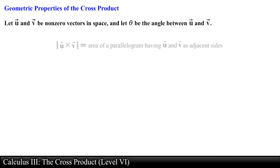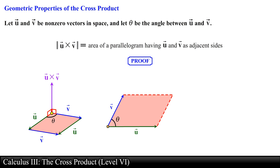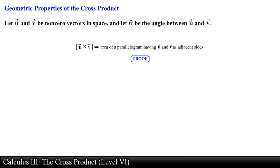The final geometric property, also introduced in the first video of this series: the magnitude of vector u crossed with vector v is equal to the area of a parallelogram having vector u and vector v as adjacent sides. To prove this, we find an expression for the area of the parallelogram given the magnitudes of vector u and vector v and the angle between them. The base equals the magnitude of vector u and the altitude equals the magnitude of vector v times sine of theta — which is exactly the magnitude of vector u crossed with vector v. This ends the proof.